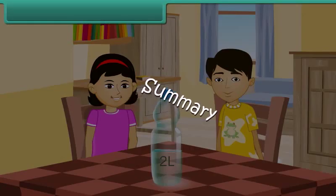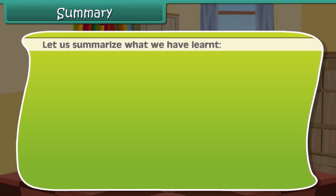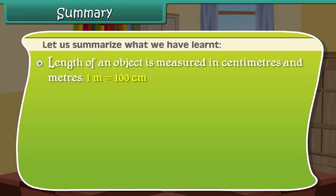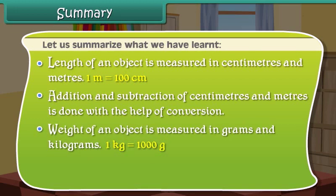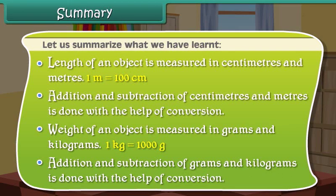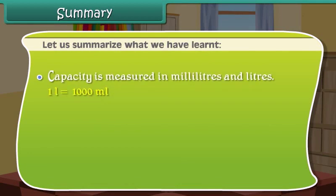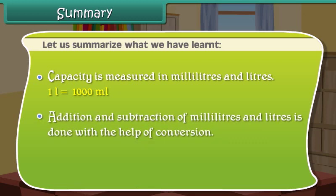Summary: Length of an object is measured in centimeters and meters; 1 meter equals 100 centimeters. Addition and subtraction of centimeters and meters is done with the help of conversion. Weight of an object is measured in grams and kilograms; 1 kg equals 1000 grams. Addition and subtraction of grams and kilograms is done with conversion. Capacity is measured in milliliters and liters, and addition and subtraction of milliliters and liters is also done with conversion.